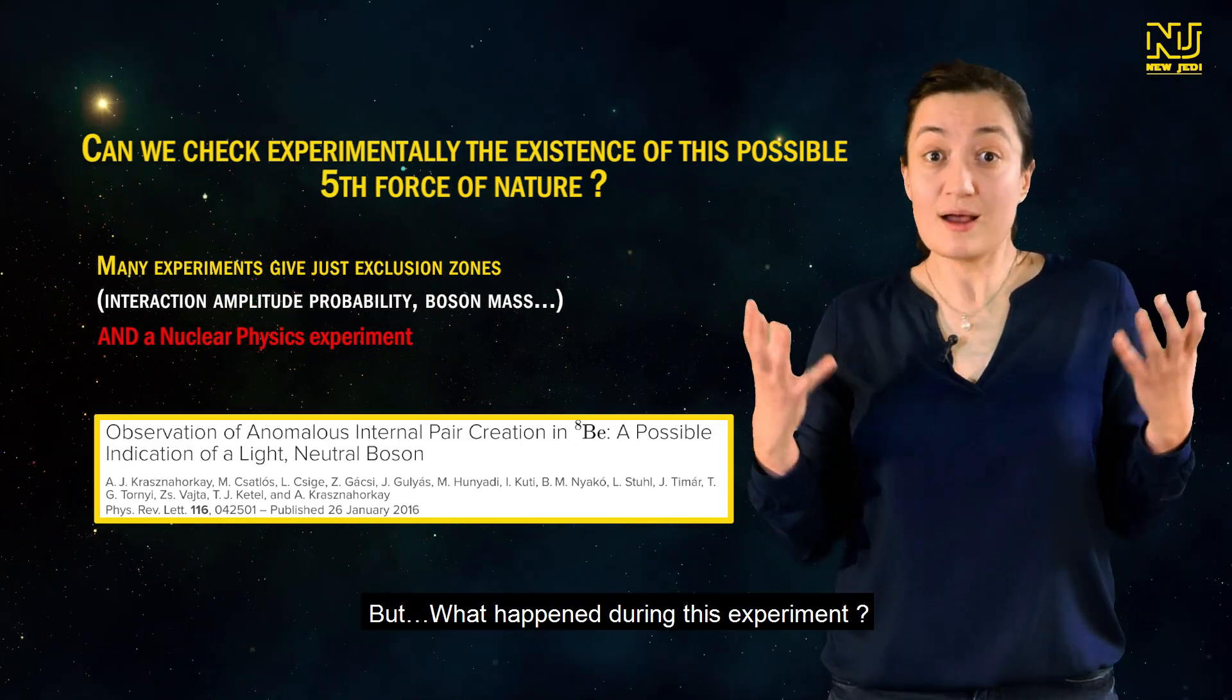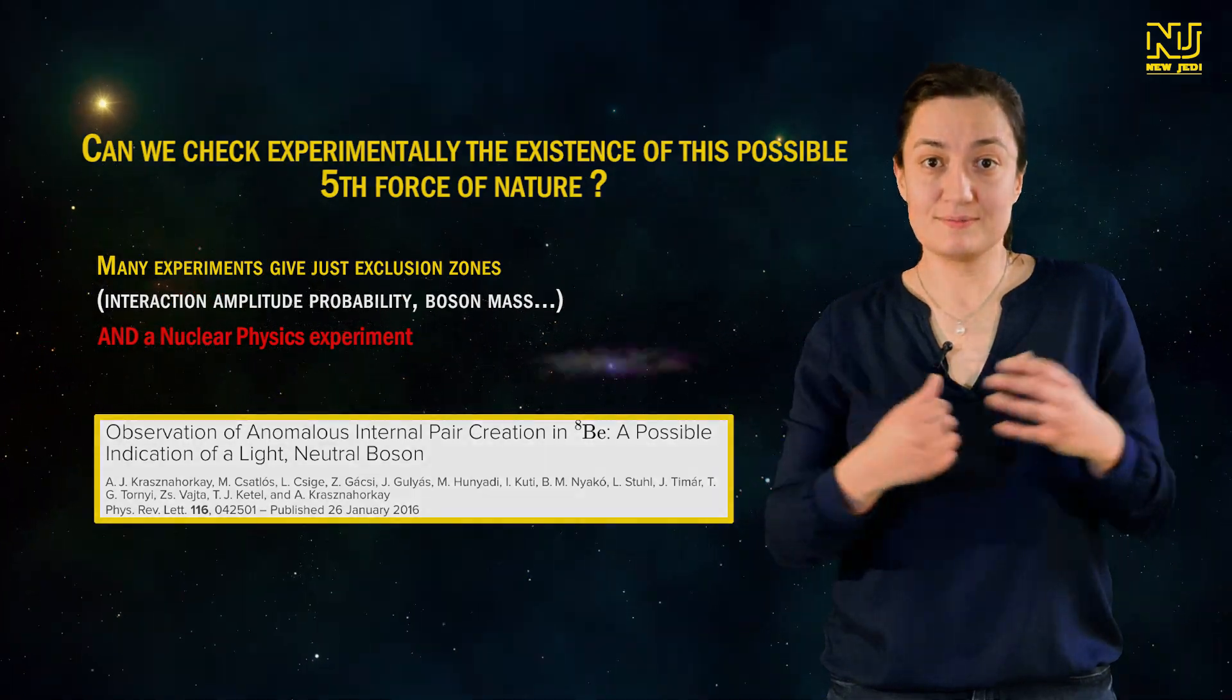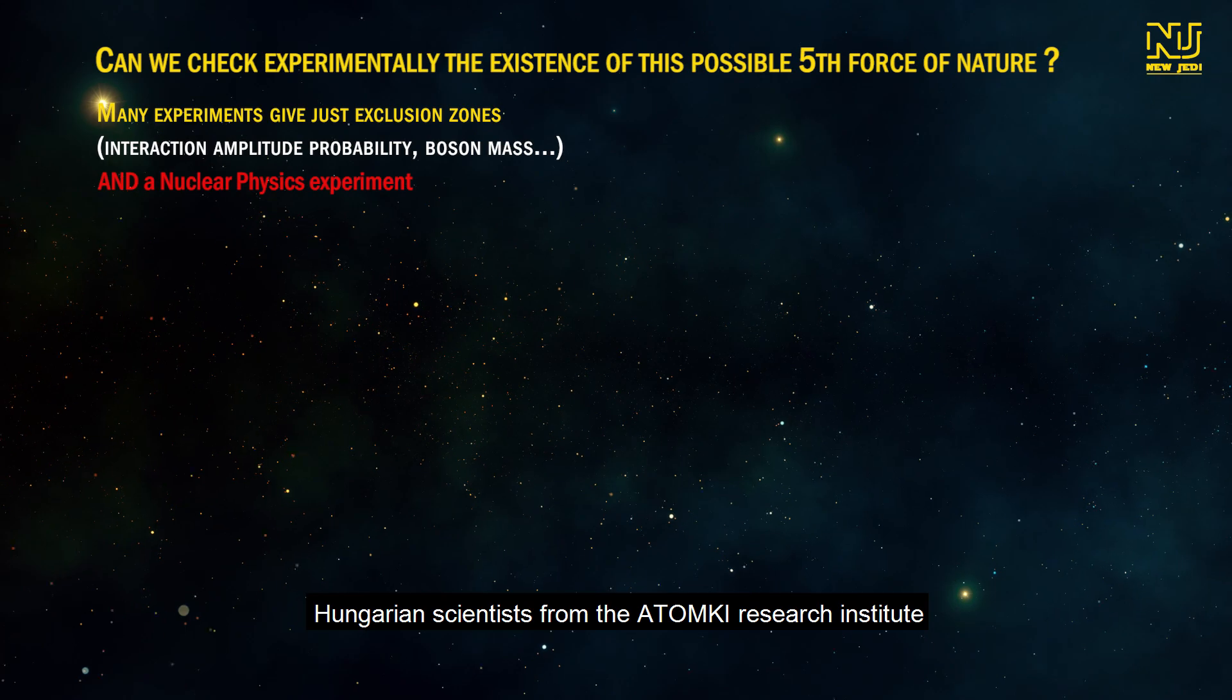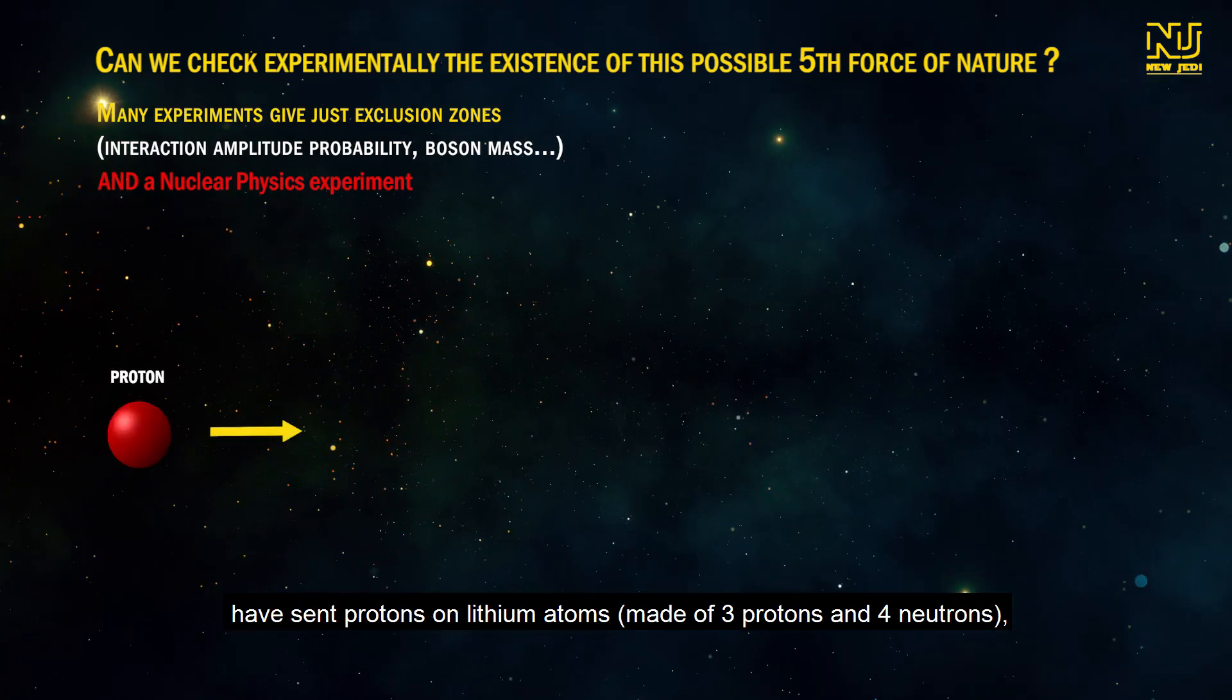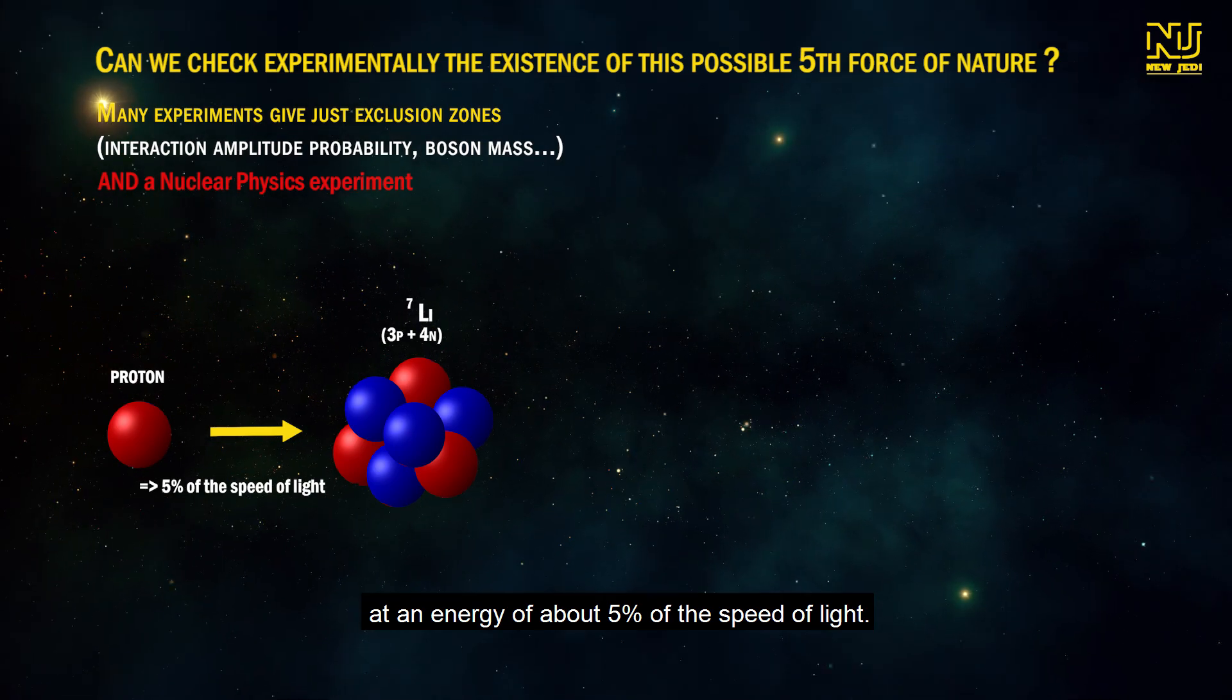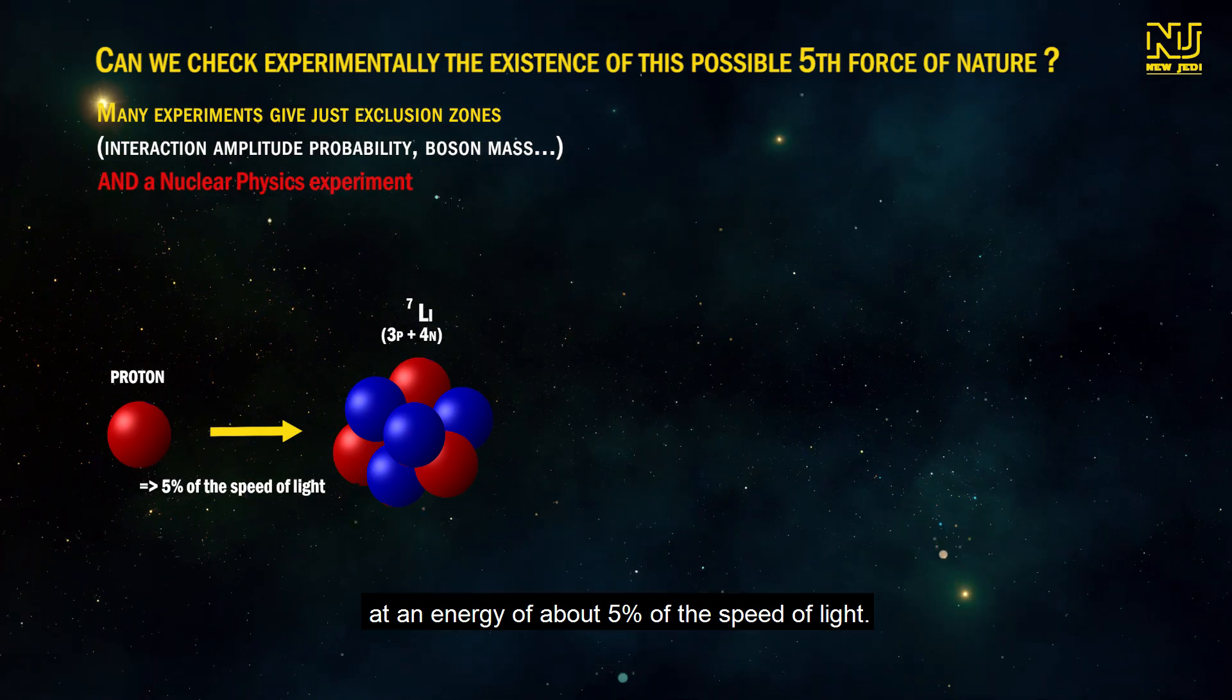But what happened during this experiment? Hungarian scientists from the Atomki Research Institute have sent protons on lithium atoms made of three protons and four neutrons at an energy of about 5% of the speed of light.